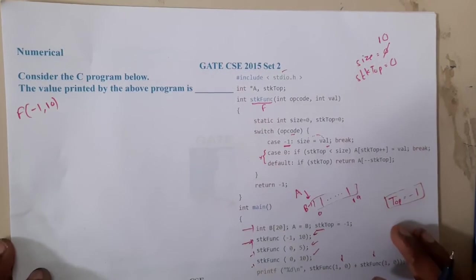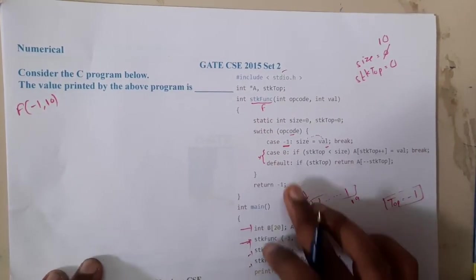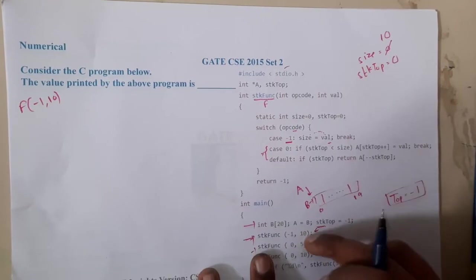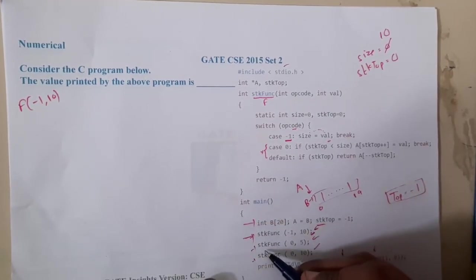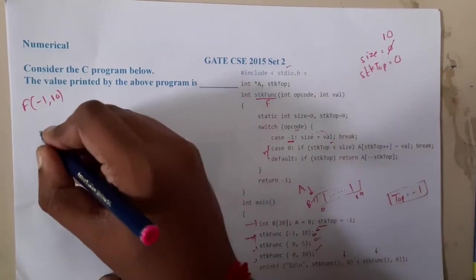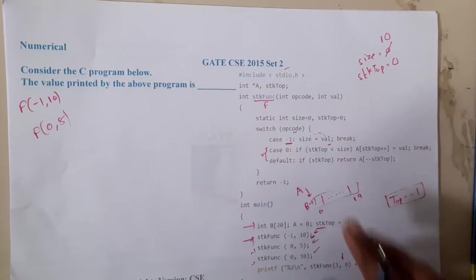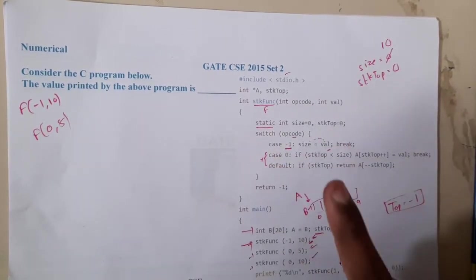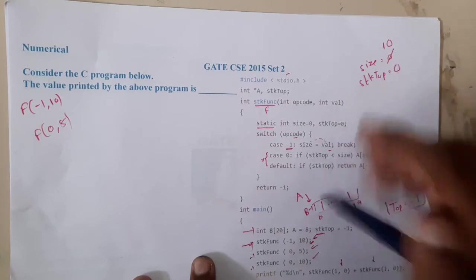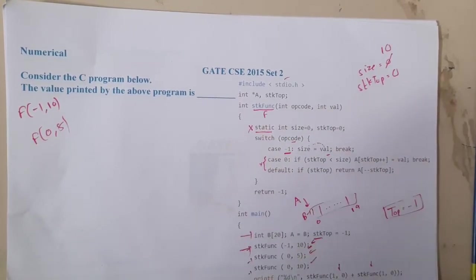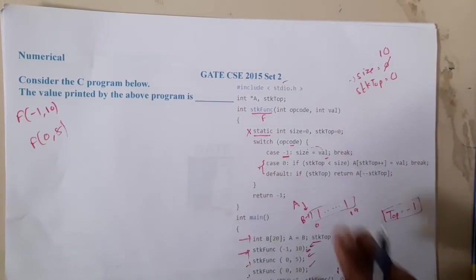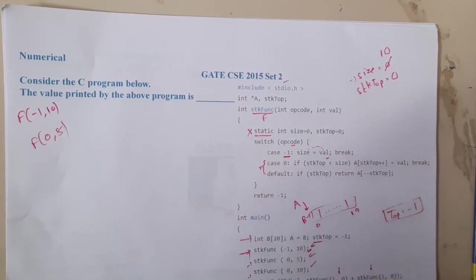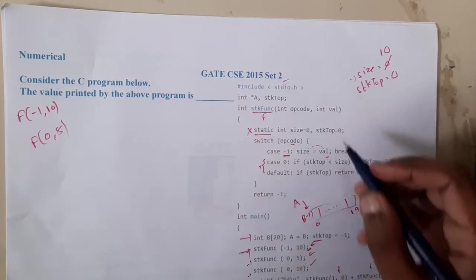Now size equals 10. One important thing to remember: when using static variables, they are initialized only once. So from this point on, the initialization statement won't execute again. Size stays at 10 permanently — it will not reset to 0. Static variables behave like global variables; once updated, the value is retained across all subsequent calls.